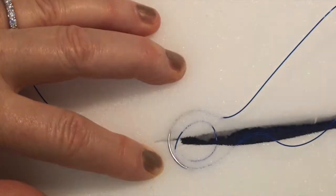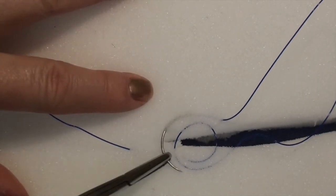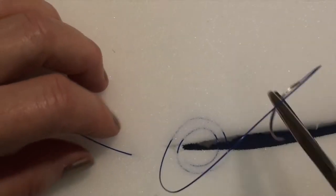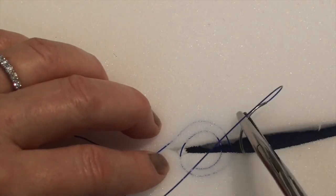Your suture material is effectively locked into place and now you can start on your subcutaneous or subcuticular pattern. When you get to the end of your incision line, simply reverse the process.